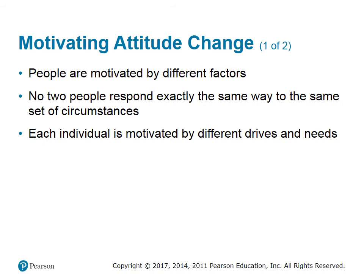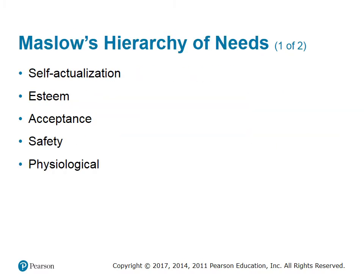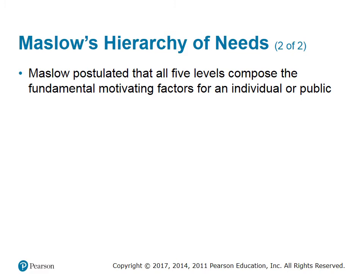Motivating attitude change: people are motivated by different factors. No two people respond exactly the same way to the same set of circumstances, and each individual is motivated by different drives and needs. Abraham Maslow's hierarchy of needs theory helps define the origins of motivation, which in turn helps explain attitude change. The lowest order is physiological needs — a person's biological demands: food, water, sleep, health, bodily needs, exercise, and rest. The hierarchy includes self-actualization, esteem, acceptance, safety, and physiological needs. Maslow postulated that all five levels compose the fundamental motivating factors for an individual or public. Delineating what motivates publics can help you decide how to attempt to change attitudes.